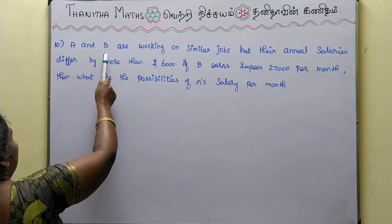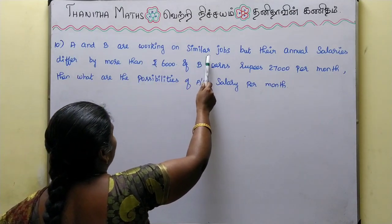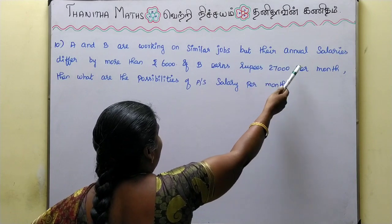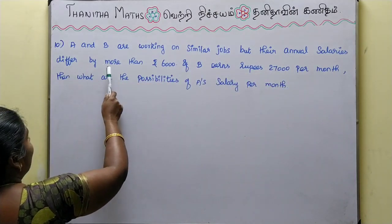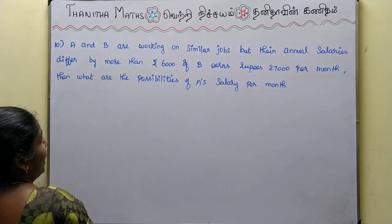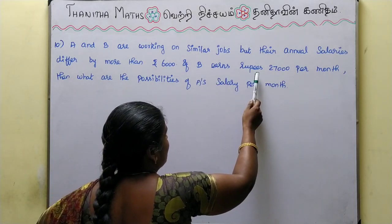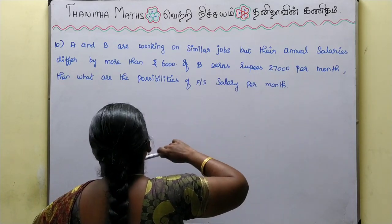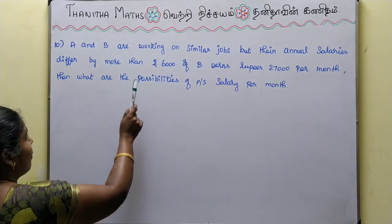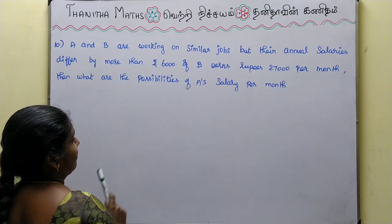A and B are working on similar jobs but their annual salaries differ by more than $6,000. If B earns $27,000 per month, then what are the possibilities of A's salary per month?